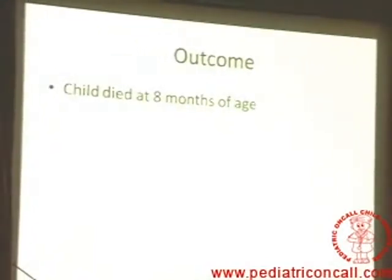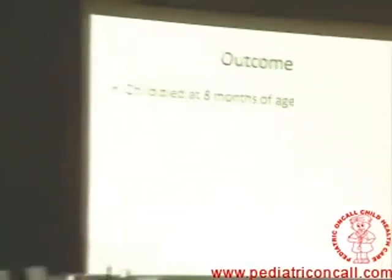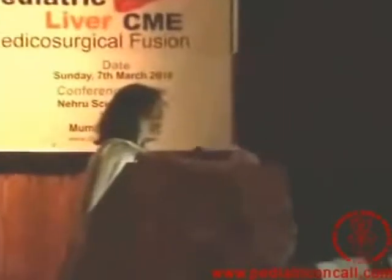The most important prognostic marker is the age of referral. This child came at 5 months; most patients at our centre come at 3 to 3.5 months, by which time liver damage has already occurred. The experience of the operating surgeon is also important. This child did undergo Kasai surgery but already had a cirrhotic liver and died postoperatively at 8 months of age — having all the poor prognostic markers: late referral, operated at 5 months, hepatic dysfunction, and ascites.